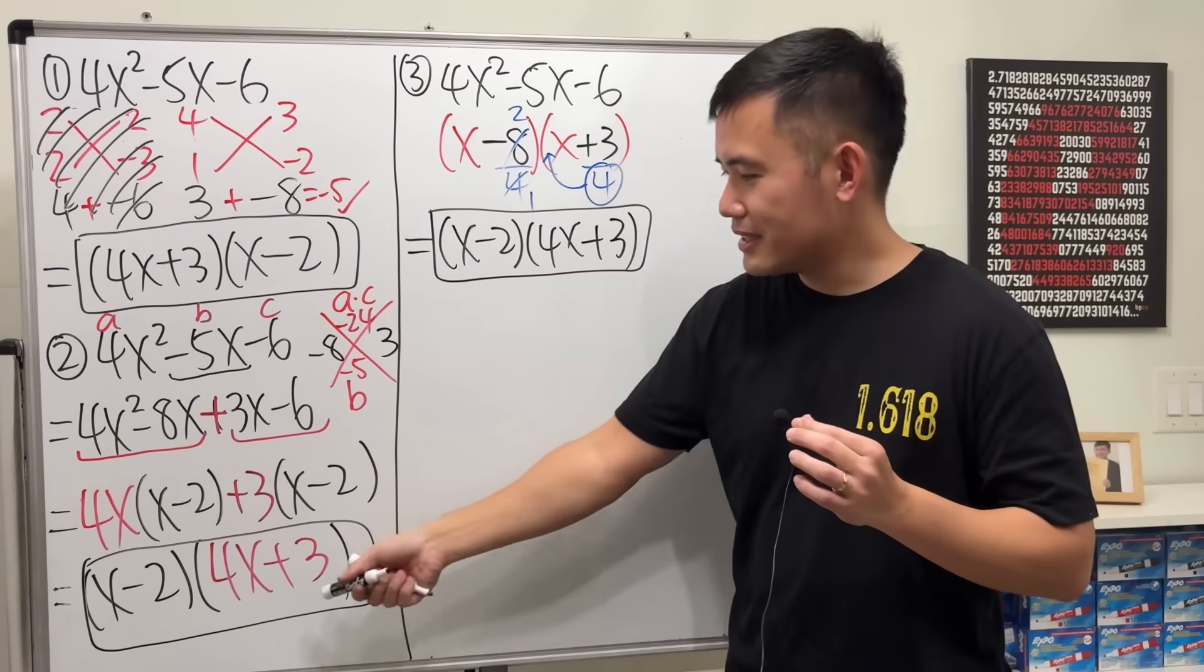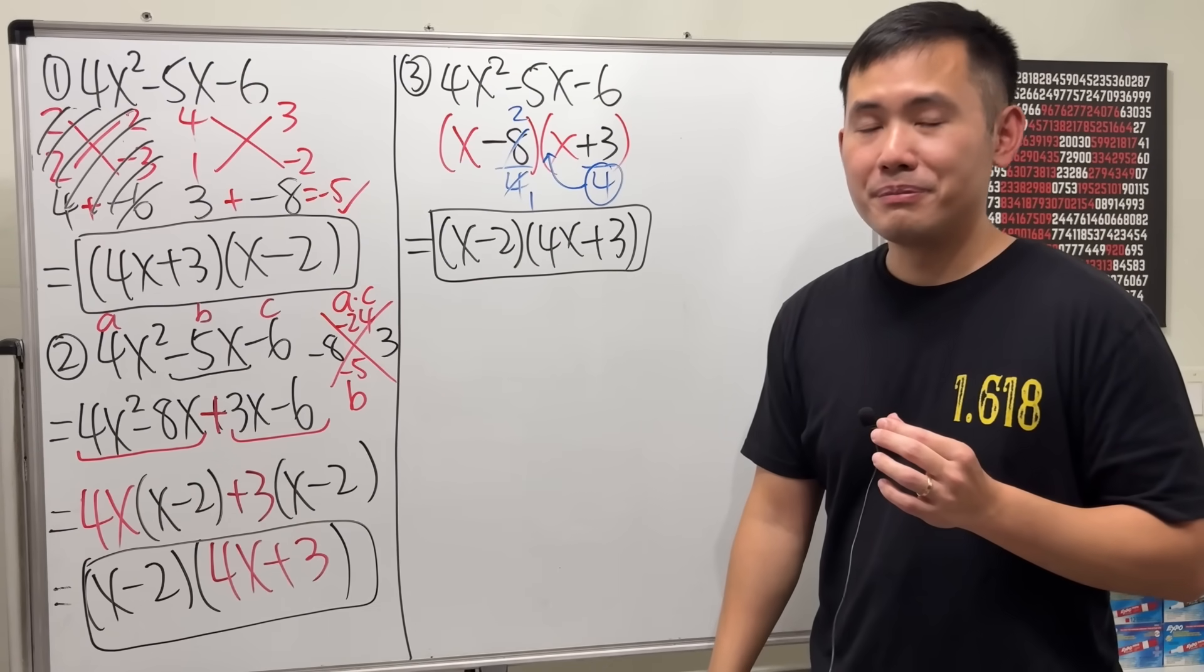You will see the answer is going to be x minus 2 times 4x. Because, the 4 is back up here now. And then, plus 3. Ladies and gentlemen. Isn't that the correct answer that we got earlier? Yes, it is.